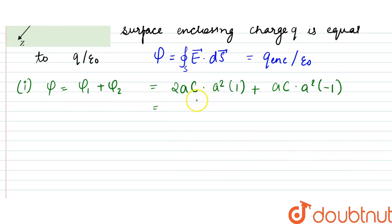Which is equal to 2A cubed C minus A cubed C, so we have A cubed C. That is Newton meter squared per coulomb, that is the unit.